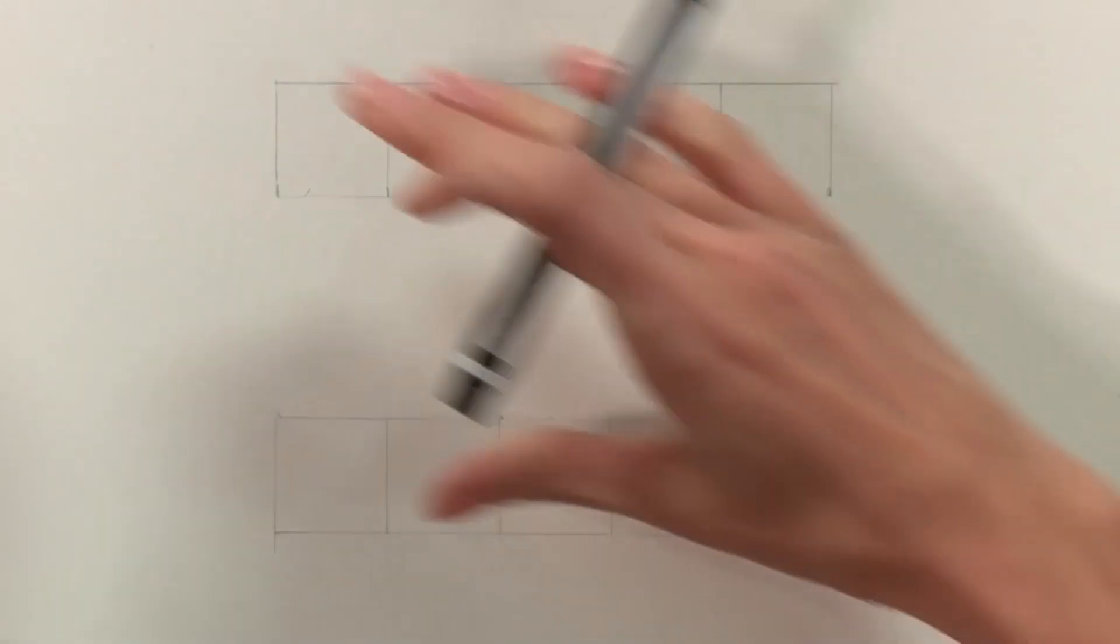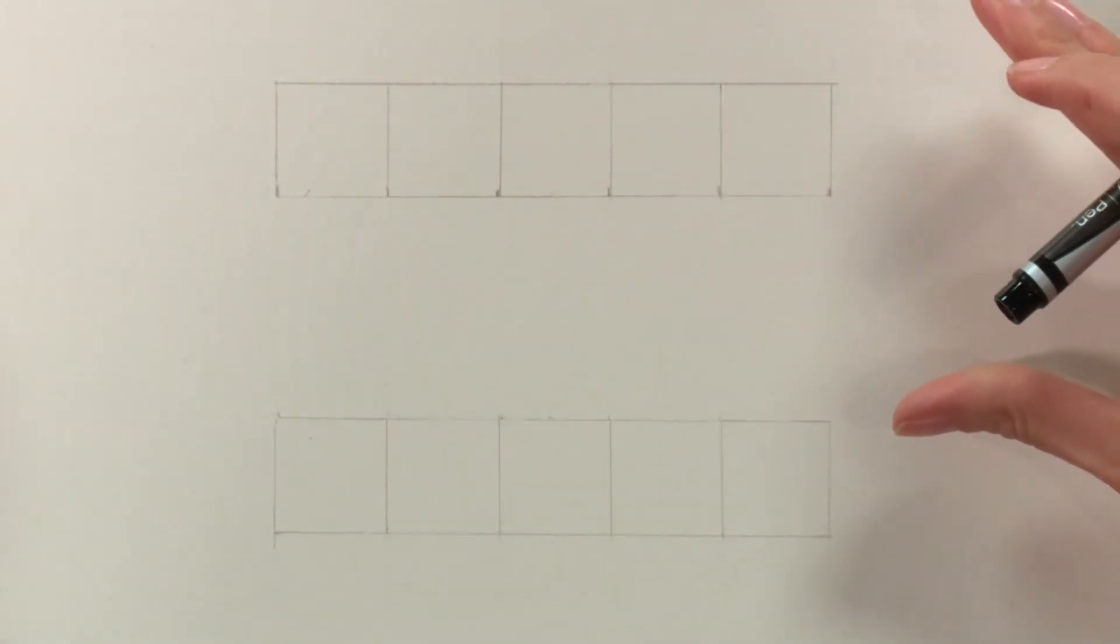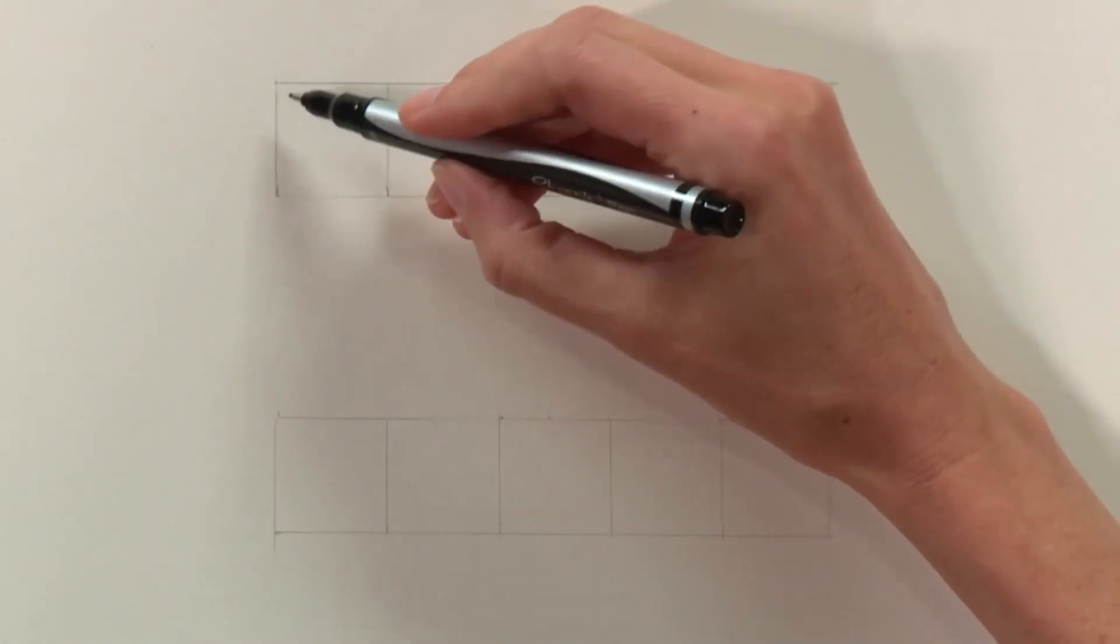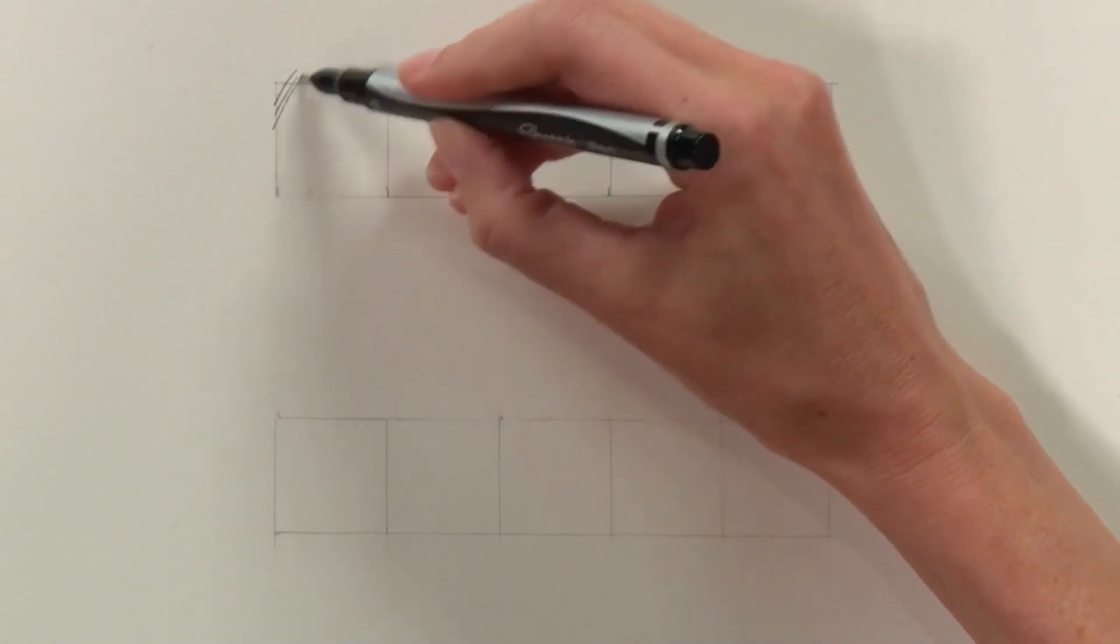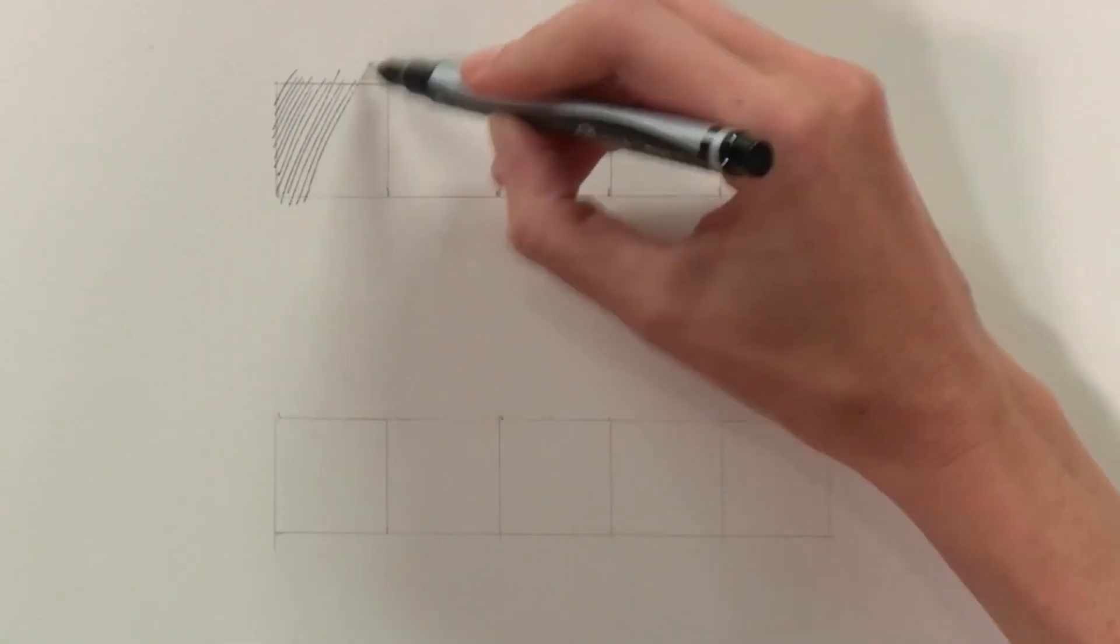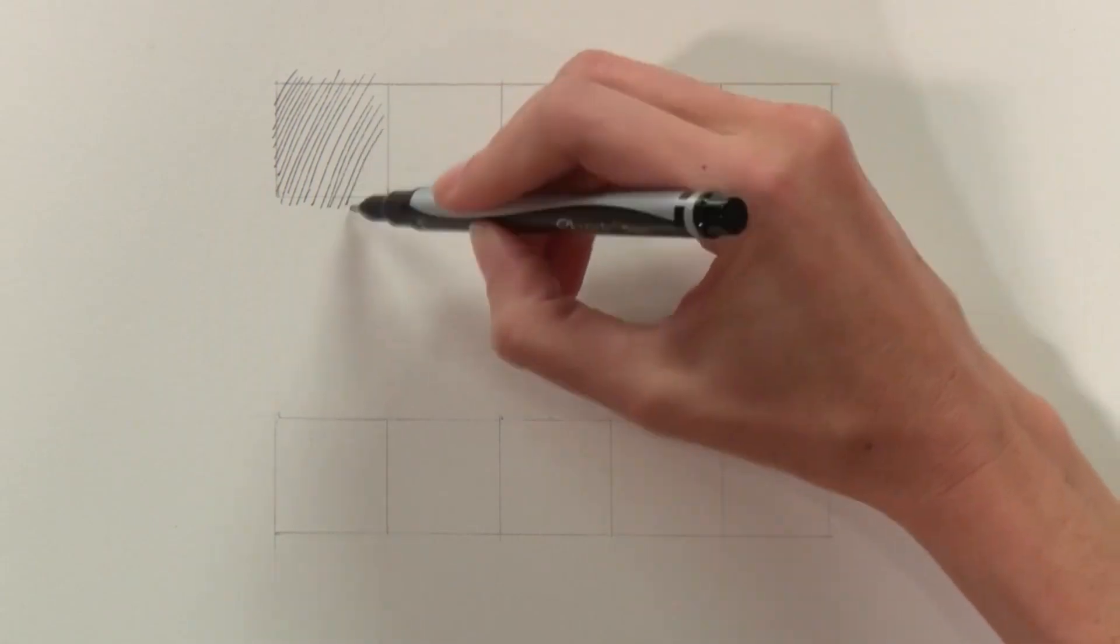Let's create a hatching value scale so you can see what I mean. Here we have our five empty boxes in a grid, and we are going to progressively start from light to dark. So starting with the hatching technique, here are some parallel lines I'm just going to toss in there. The idea is not to cross them, but to make them somewhat far apart so they appear light.